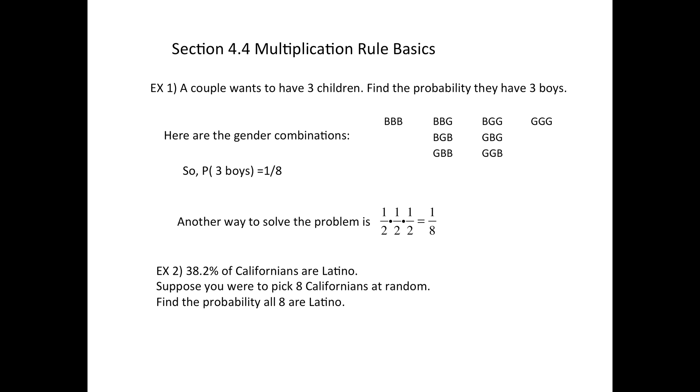So that means we would have 0.382 times 0.382 for the first person, the second person, the third person, all the way for all eight people. So if you do that eight times in a row, you could just abbreviate it by saying it's raised to the eighth. And then, put that in the calculator, there's a very small chance all eight are Latino.